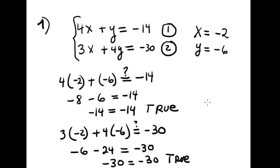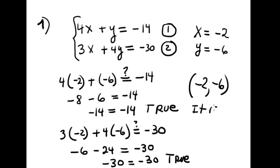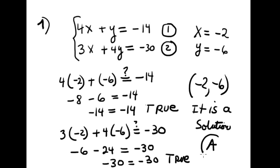The conclusion is: because the ordered pair (negative 2, negative 6) satisfies both equations, it is a solution. This corresponds with option A in the handout.